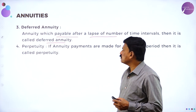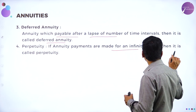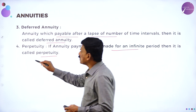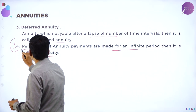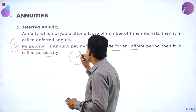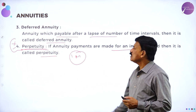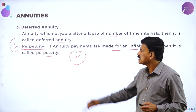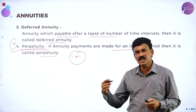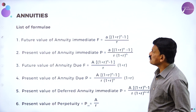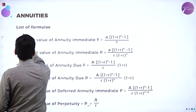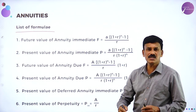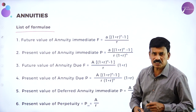Perpetuity — if the annuity payments are made for an infinite number of periods, it is called a perpetuity. This is a very important concept; you may expect one mark definition question or a problem from perpetuity. Now, let us look at the formulas used to calculate annuities, as different formulas are used depending upon the terms and conditions.